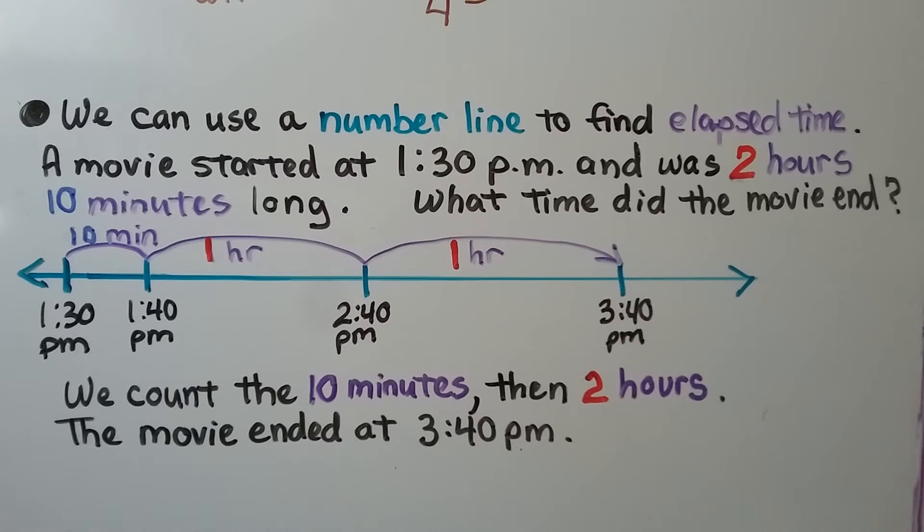We can use a number line to find elapsed time. A movie started at 1:30 PM and was two hours ten minutes long. What time did the movie end?